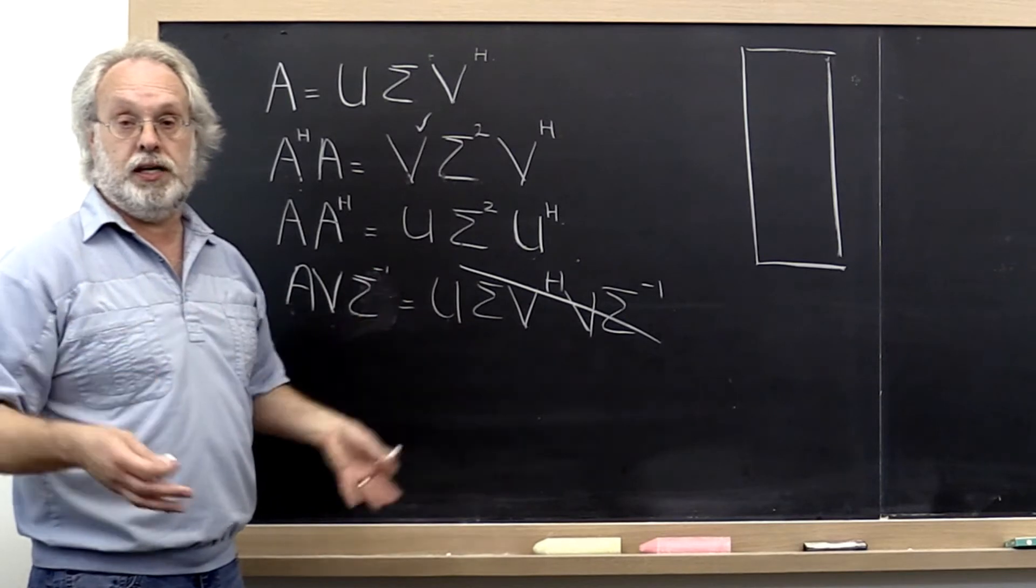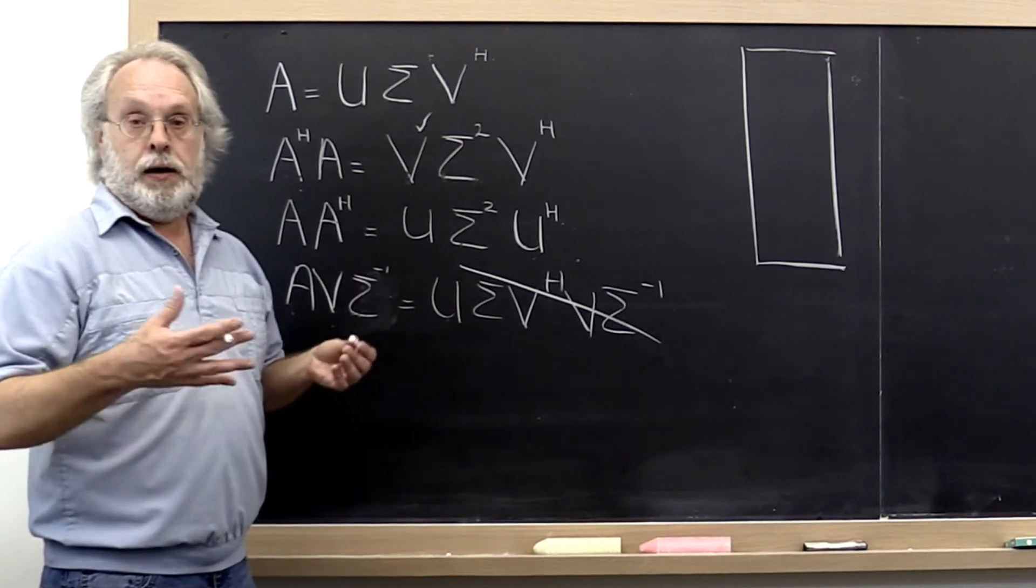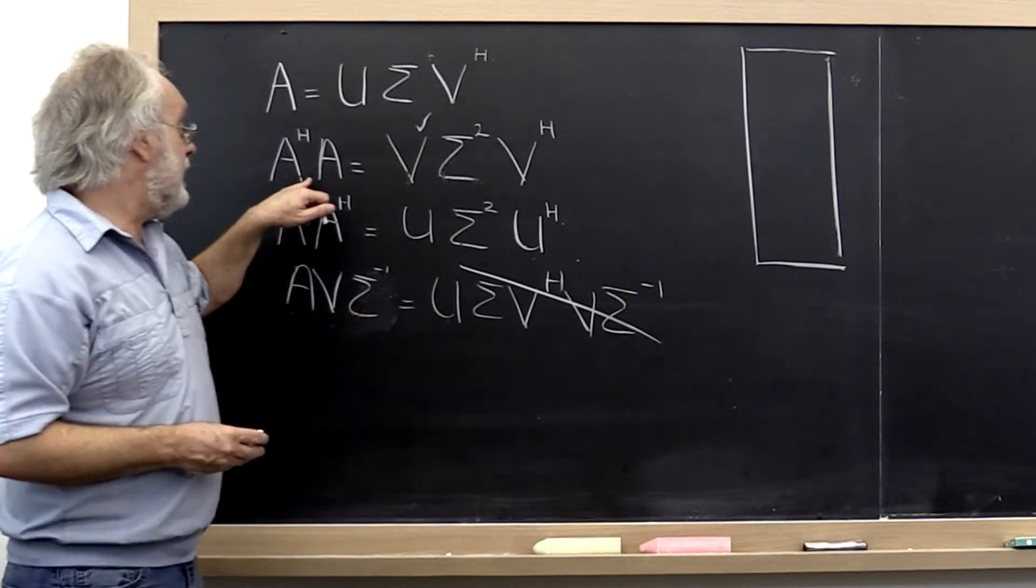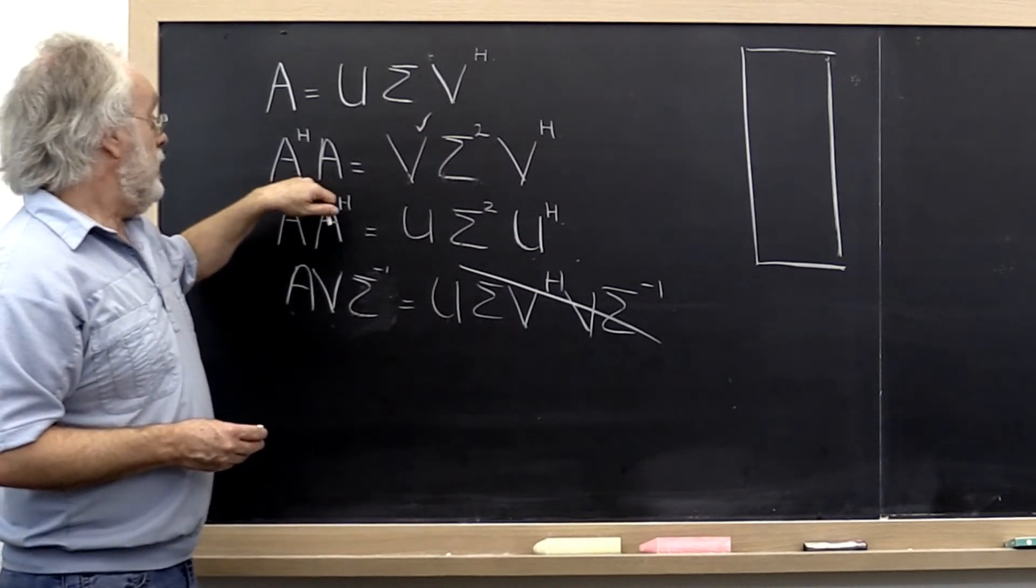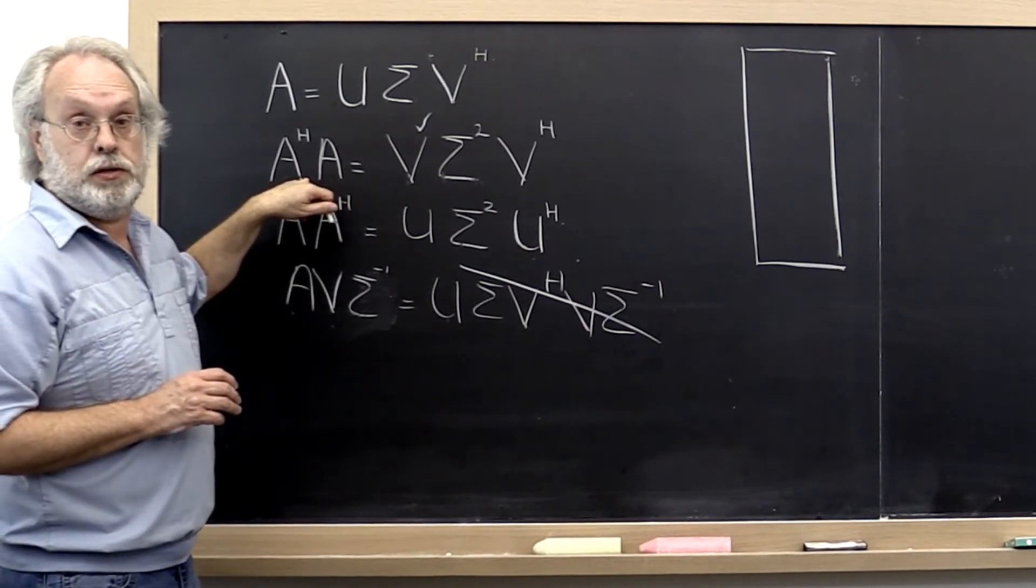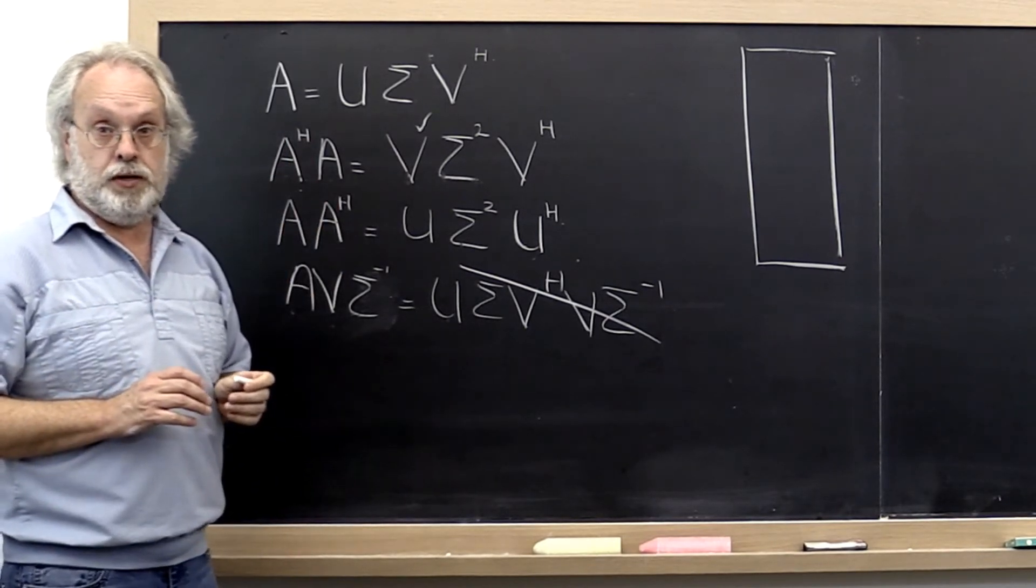The other problem is, is the algorithm that we're executing numerically stable? Now it turns out that when you form A Hermitian A, we already saw this, that squares the condition number. And that should immediately send off alarm bells.